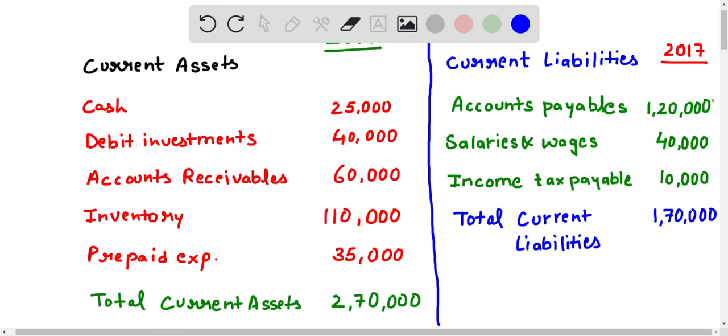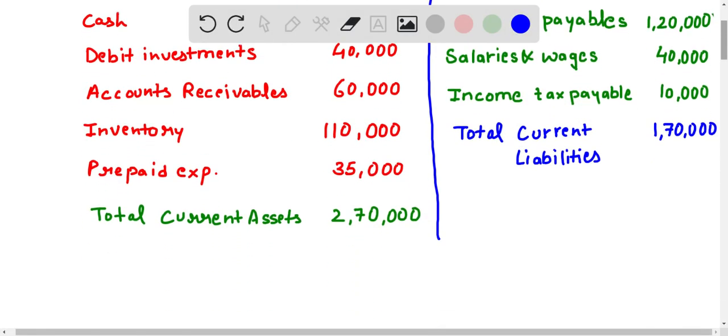We are given with the information such as current assets and current liabilities and we have also been given the total for current assets and total for current liabilities.